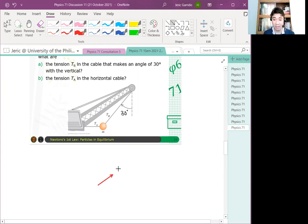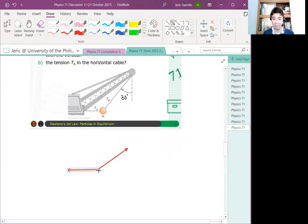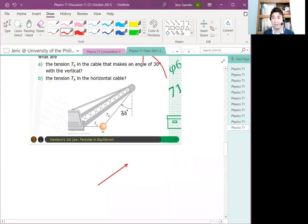So, the first one, I'll draw the tension A, like this. Something like that. Then, I'll draw tension B. Something horizontal. Something like this. Then, I'll draw the tension going downward. So, like this.